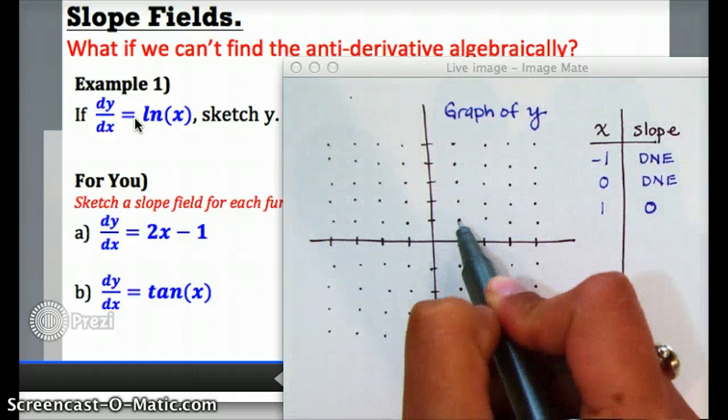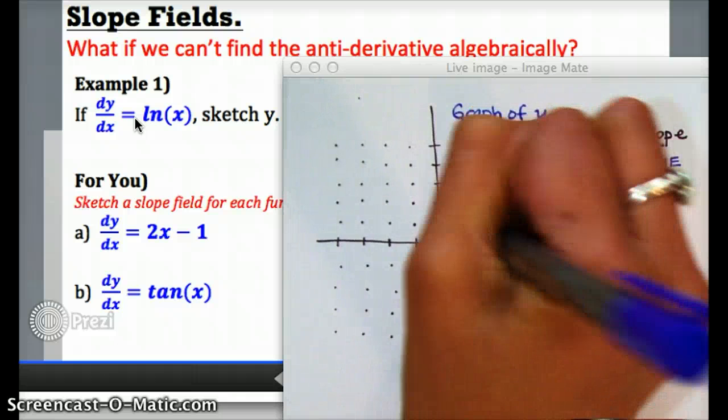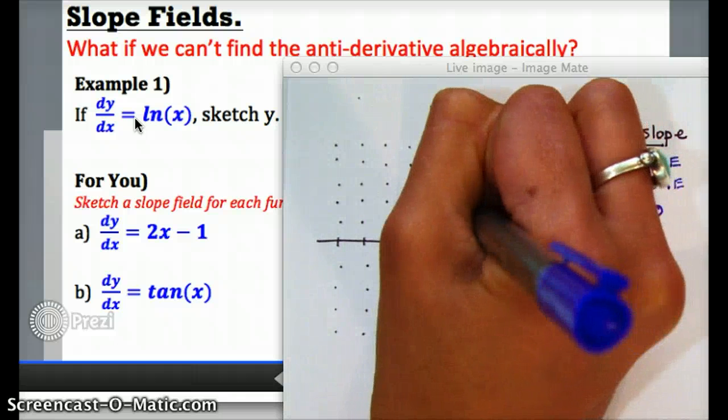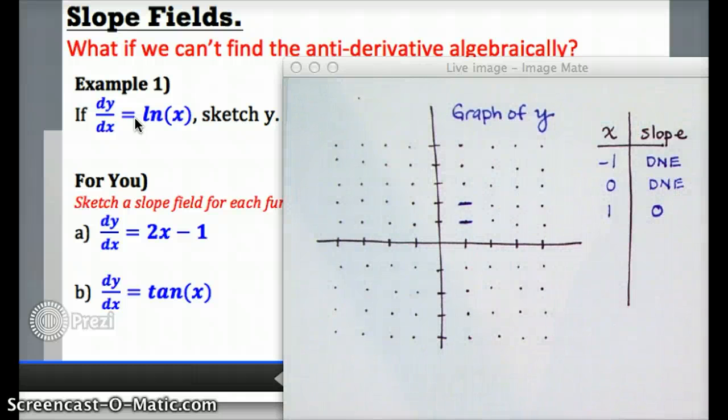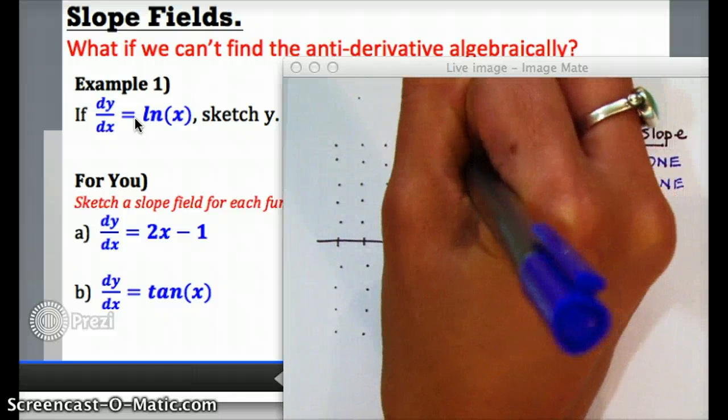For example, this point has an x value of 1, and I'm going to sketch a tiny little tangent line with a 0 slope. And then this point also has an x value of 1, so I'm going to sketch tangent lines all up and down.